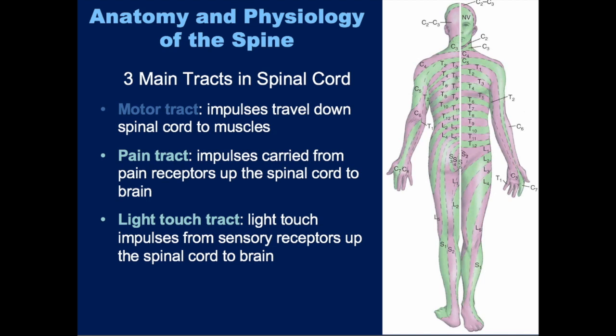The three main tracts of the spinal cord are important to understand so that you can properly evaluate your patient and look for any signs of neurological damage. The first one is the motor tracts, which carry impulses down the spinal cord and out to the muscles. Importantly, if the motor tract is on the right side of the spinal cord, it carries impulses allowing the patient to move on the same side — the right side. The nerves run on the same side that they control.